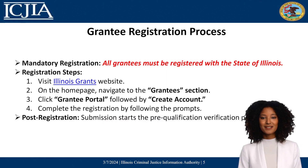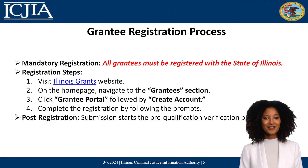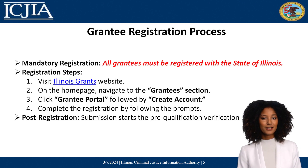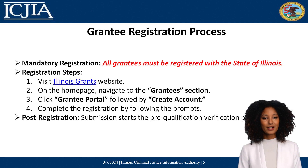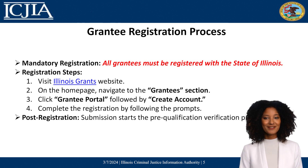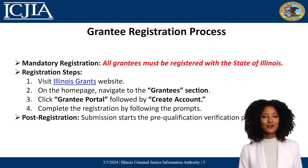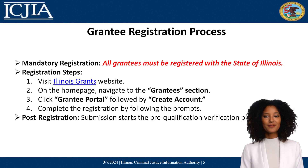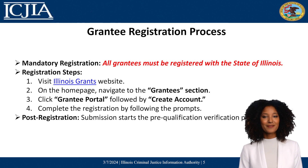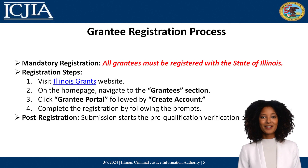Starting your journey as an Illinois grantee is straightforward. This includes making sure you're in good standing with the Secretary of State and getting a unique entity identifier through SAM.gov. First, visit the Illinois Grants website and find the Grantees section. Here, you'll create an account through the grantee portal. Follow the prompts to complete your registration. This step is crucial as it kicks off the pre-qualification verification, ensuring you're ready to proceed.